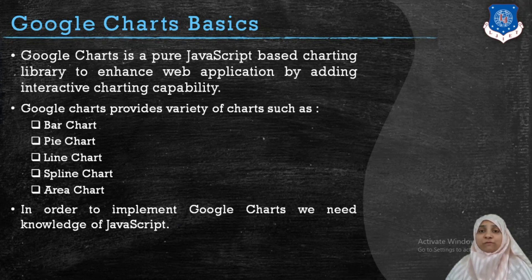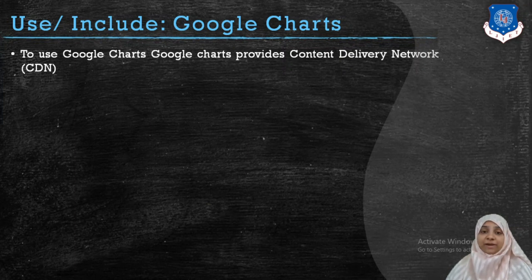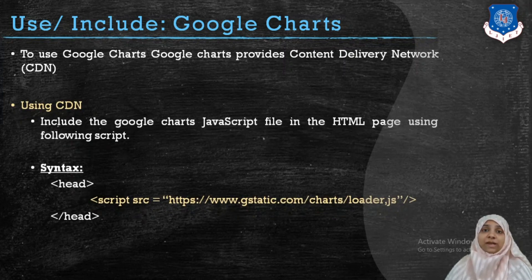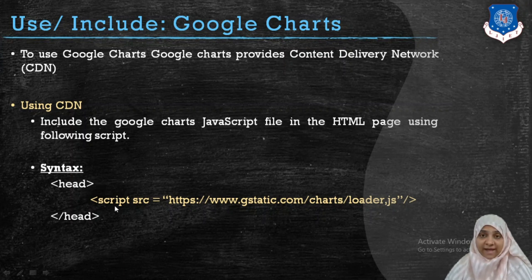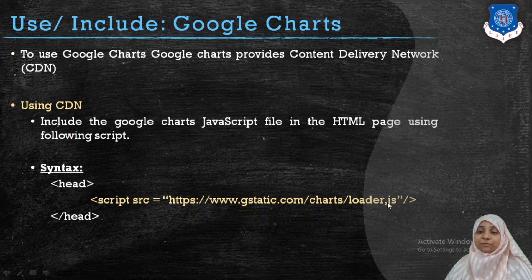In order to implement Google Charts we must have an understanding of JavaScript. The very first thing is to include the Google Chart library into a web page, which can be done with the help of a Content Delivery Network. The CDN, when the web page loads, downloads the Google Chart library into your web browser. You must have an active internet connection to use this CDN-enabled JavaScript library. To include Google Charts, inside the head tag you put a script tag with src equal to https://www.gstatic.com/charts/loader.js.